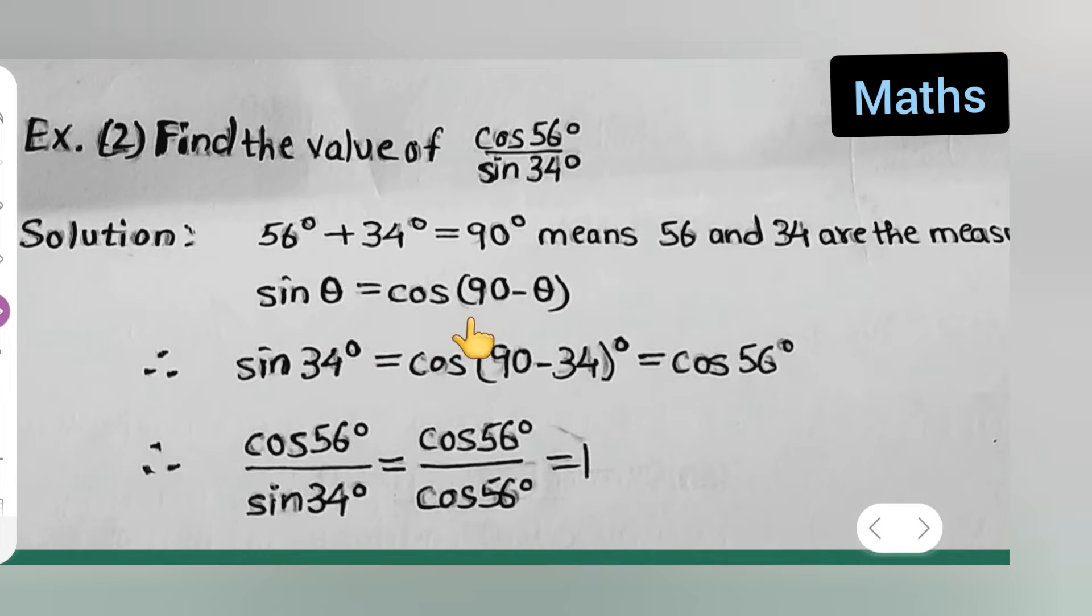Sin theta is equal to cos of 90 minus theta. You all have to remember. Then take sin of 34 degree. The value of theta will be 34 degree is equal to cos of 90 minus theta is 34.